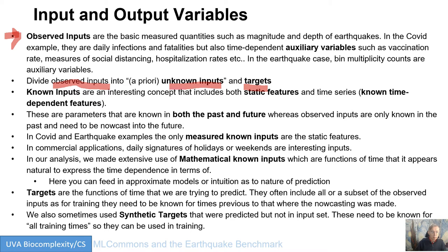As well as observed inputs, there are known inputs. A good example is the faults for earthquakes — faults are known, and they're known at all times. The mathematical properties we're going to use are also known forever, since math is math. So known inputs are ones that are known at every time, whereas observed inputs are only known when you observe. When you go to the future, you do not have any observed inputs — that's what you're predicting.